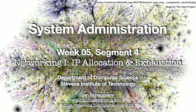Hello, and welcome back to CS615 System Administration. This is week 5, segment 4, and so far we've covered a fair bit of ground with respect to the IP protocol, having looked at the details of the IPv4 and IPv6 headers. But we've avoided the difficult question: where do IP addresses come from? And just why do we have an IPv4 and an IPv6 address — and what happened to IPv5?